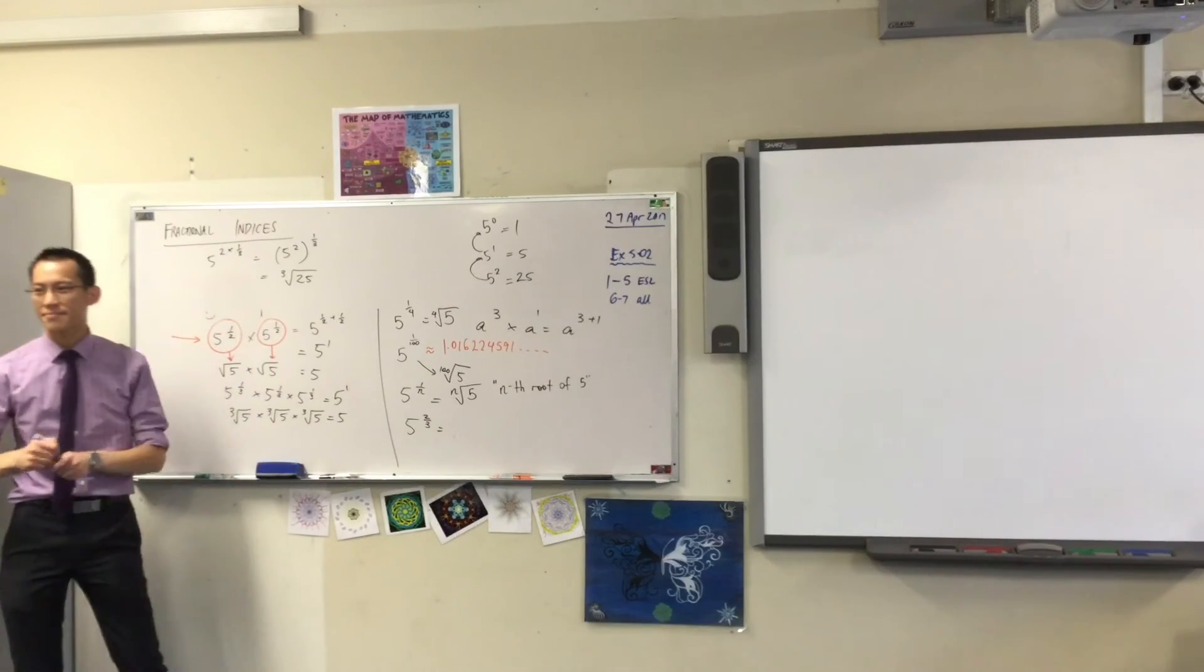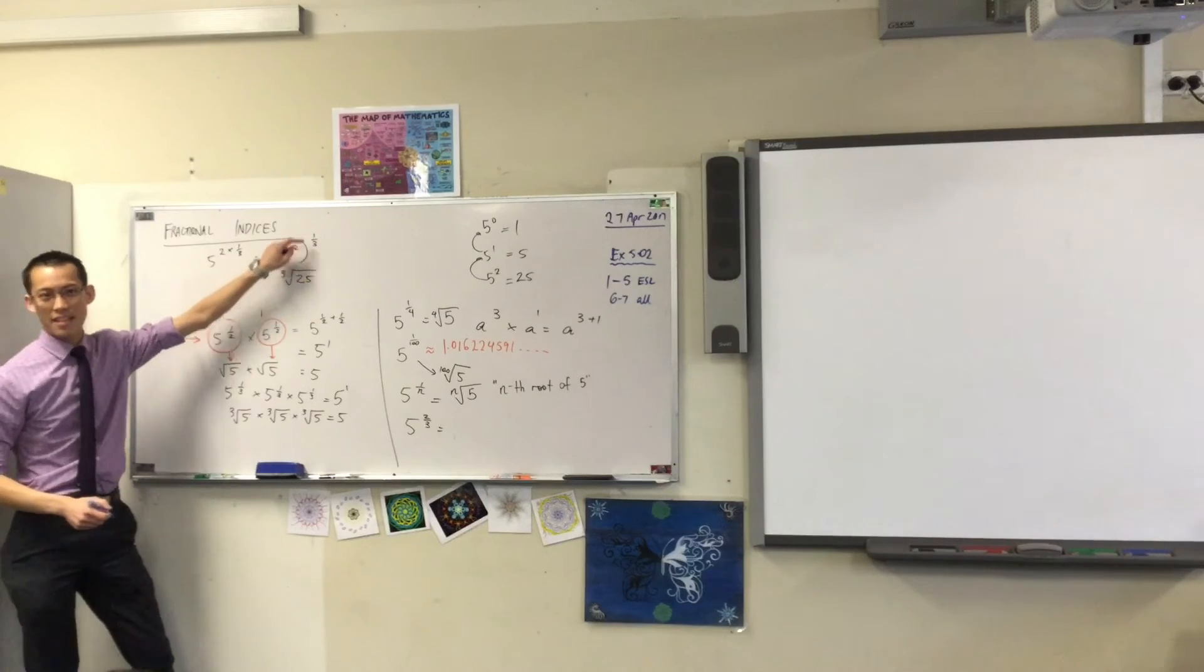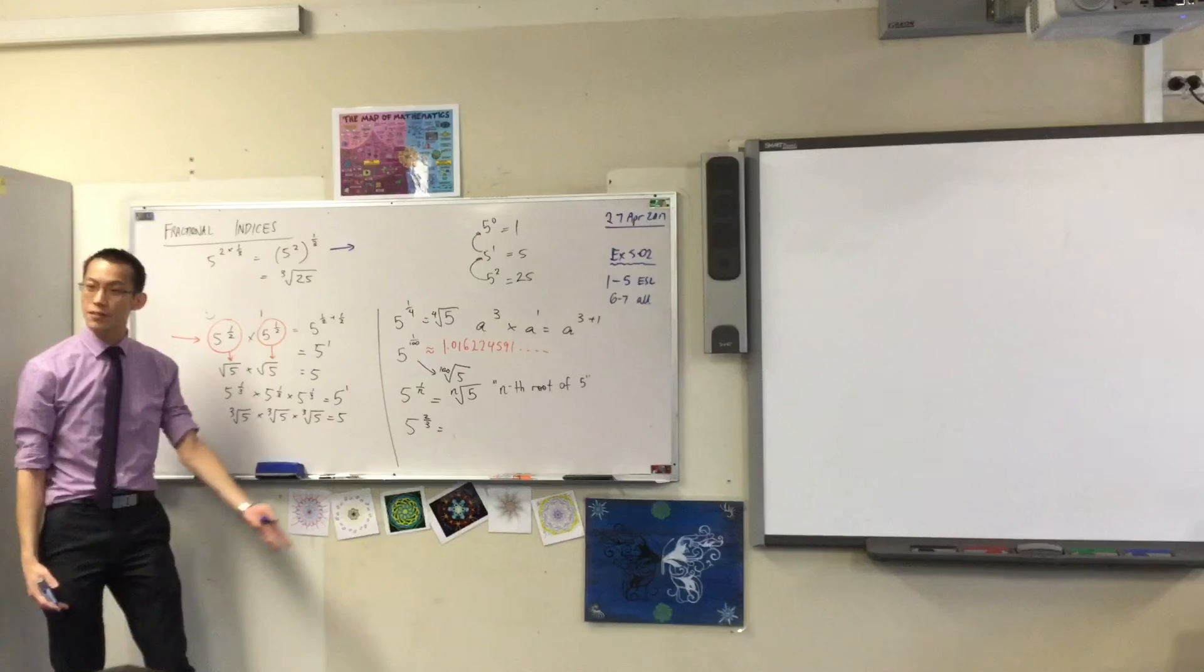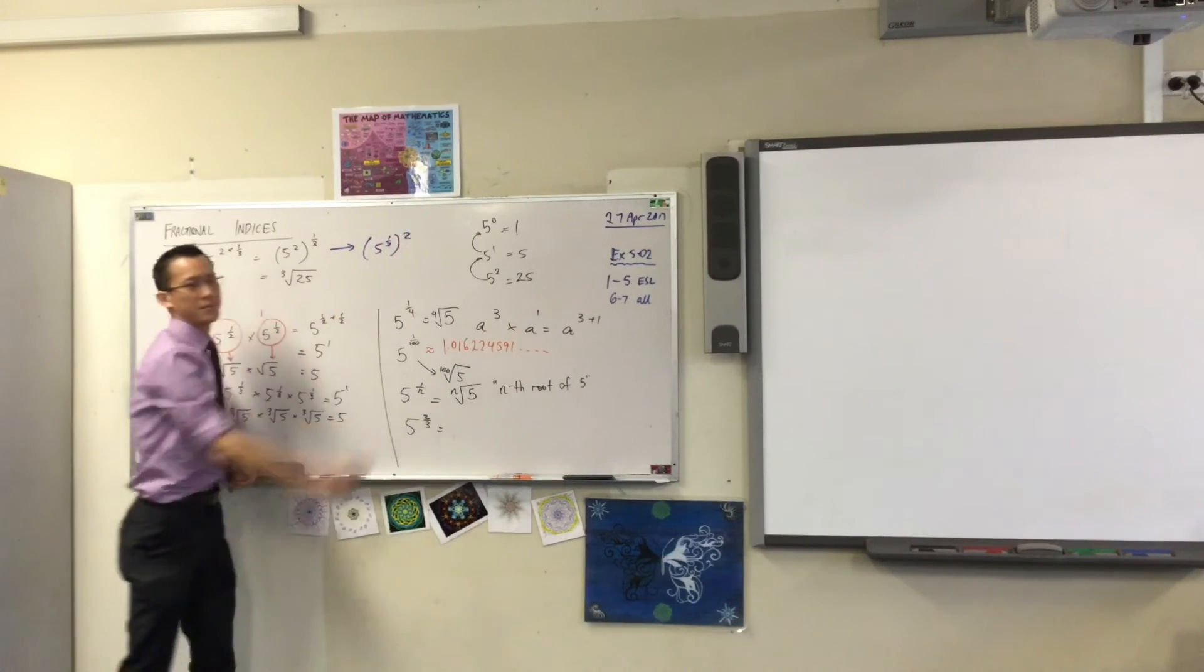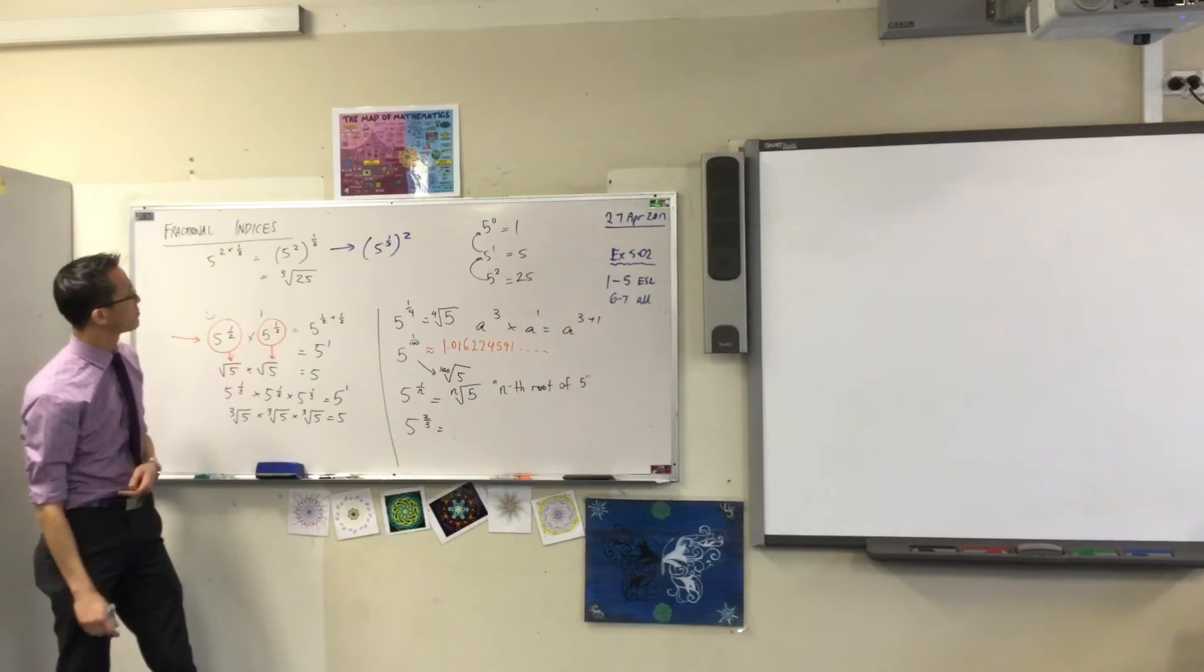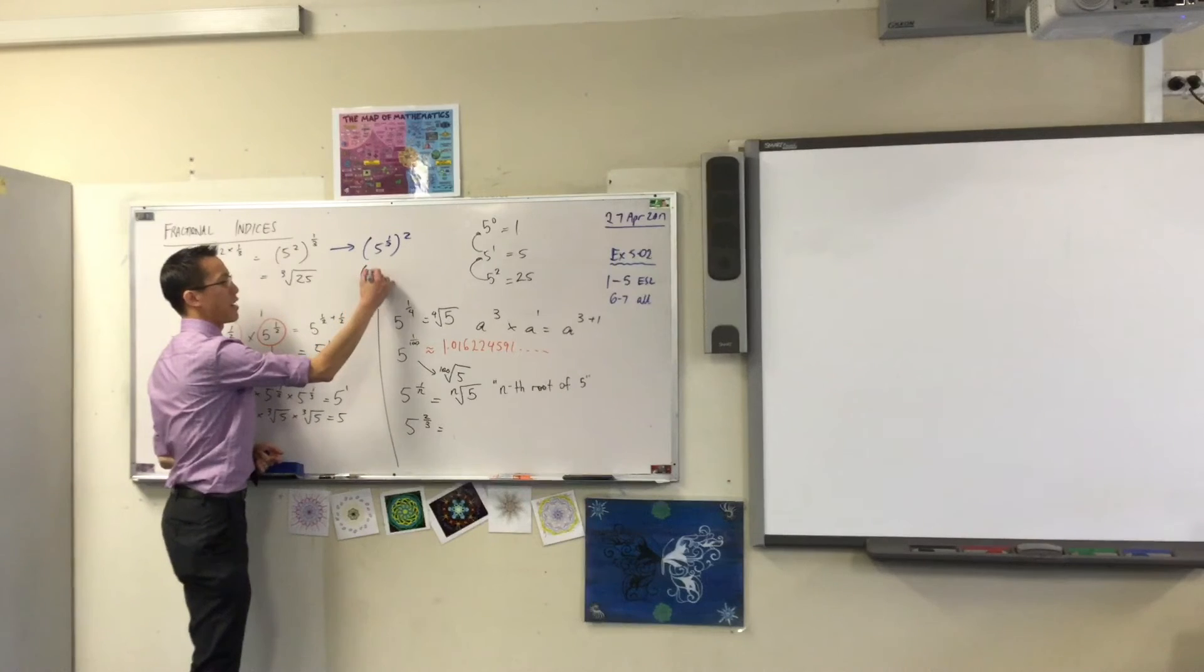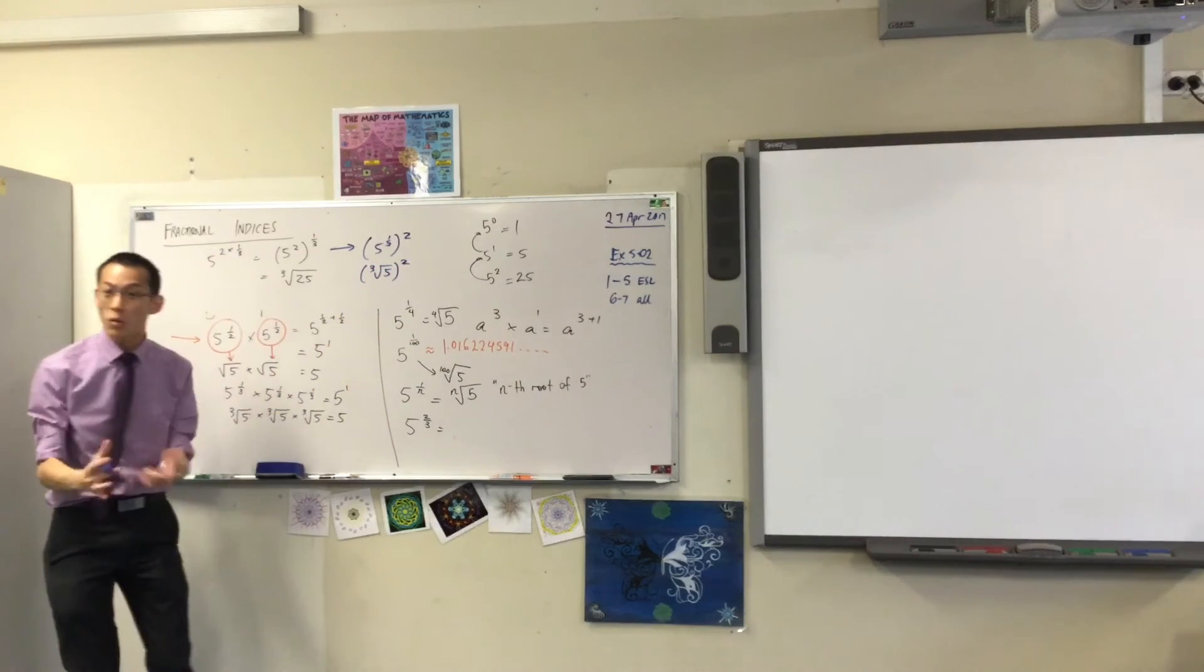Or alternatively, can you see on this line I'm squaring first and then I'm doing the power of a third after. I could do it in a different order too. I could do the power of a third and then square it. So instead of the cube root of 25, I could have the cube root of 5 squared. They're all the same thing.